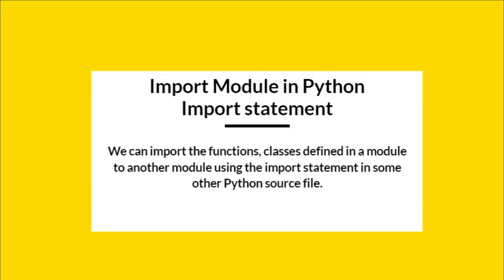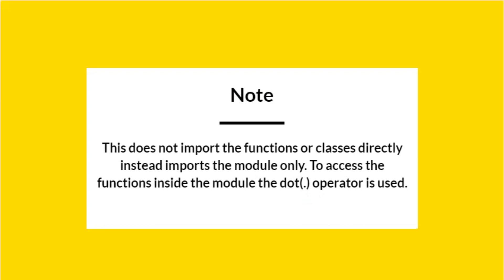To import a module in Python, we use the import statement. We can import the functions and classes defined in a module to another module using the import statement in another Python source file. Note: this does not import the functions or classes directly — it imports the module only. To access the functions inside the module, the dot operator is used.